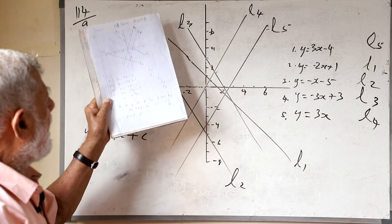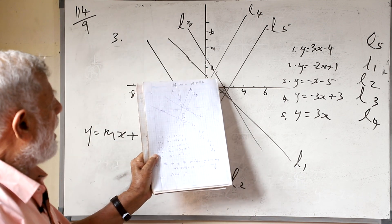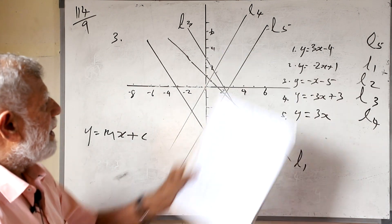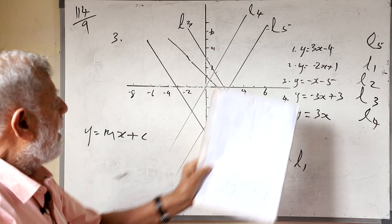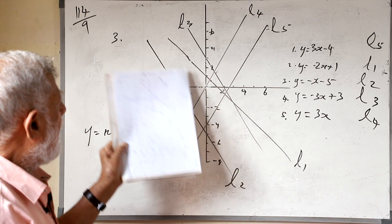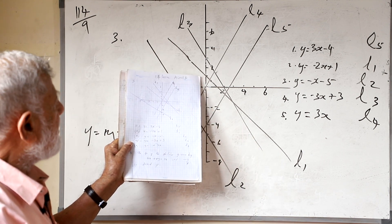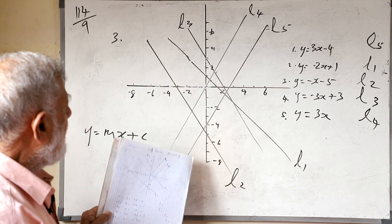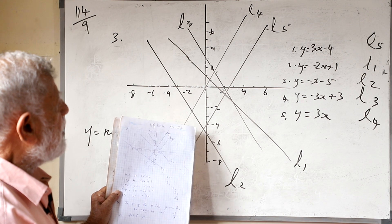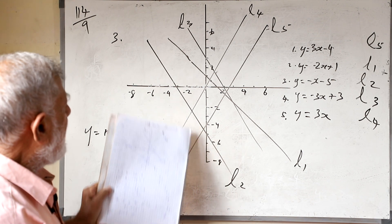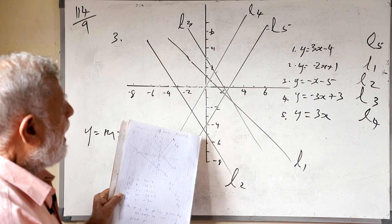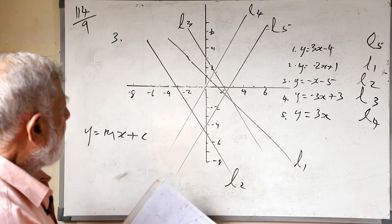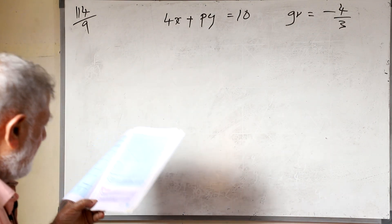The gradient is negative — it is making an obtuse angle with the x-axis. So these are the lines: L1 is going through plus 1, L5 is going through minus 4, L2 is going through minus 5, L3 is going through plus 3, and L4 is going through 0.